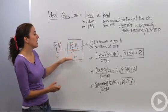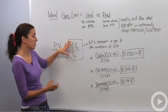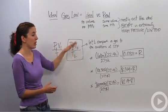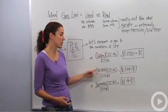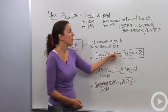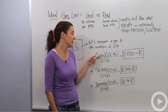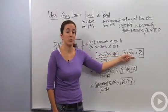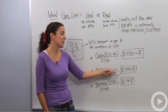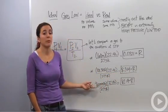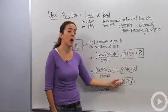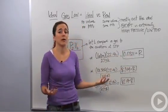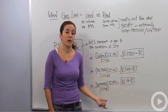So if we were to replace pressure times volume over temperature with our conditions at STP, we get a certain number. And depending on our pressure unit, we get different numbers. So if we're using atmospheres, we get 0.0821. If we're dealing with kilopascals, we get 8.314. If we're dealing with millimeters of mercury or torr, we get 62.4. And since this will always be the case, we're going to just make it a constant. And we're going to use the letter R to denote that constant.